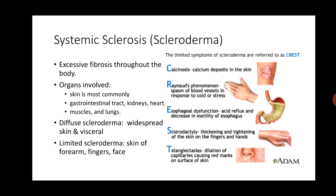The disease can be diffuse — known as diffuse scleroderma — with widespread involvement of skin and other viscera, or it can be limited, where only skin or some areas of the fingers and face are affected. Very commonly this is associated with a syndrome known as the CREST syndrome, a mnemonic that stands for Calcinosis, Raynaud's phenomenon, Esophageal dysfunction, Sclerodactyly and Telangiectasia.